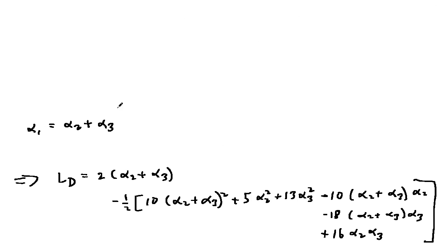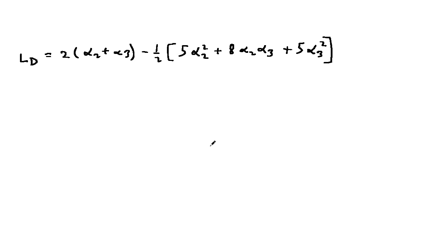Using alpha1 equals alpha2 plus alpha3, we rewrite L sub d as this — just plug in alpha2 plus alpha3 for alpha1. Simplifying, we get this. So we want to maximize L sub d subject to the constraints alpha2 is greater than or equal to 0 and alpha3 is greater than or equal to 0.